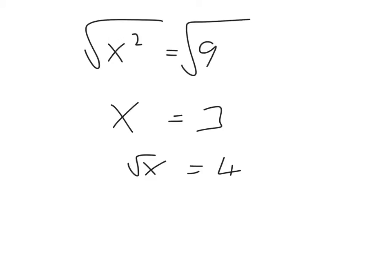What we can do is we can get rid of the square root by squaring. Of course, we have to remember to do it on both sides. So if we square a square root, again, that just gets rid of the square root. So we're left with x here and 16 over here.